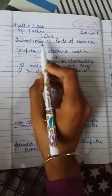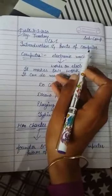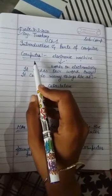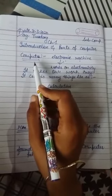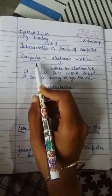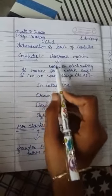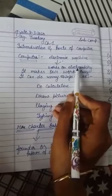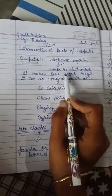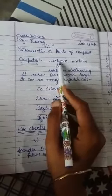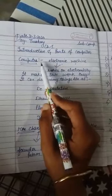Chapter number one, introduction and parts of computer. Today we will discuss about computer and its parts. So first is computer. What is computer? Computer is an electronic machine. Electronic means which works on electricity. Machines which work on electricity are called electronic machines like computer, washing machine...